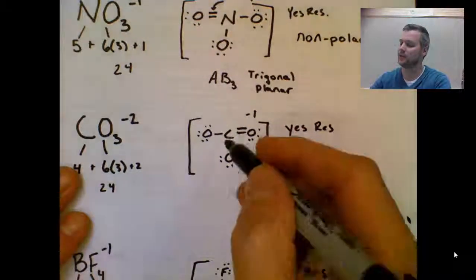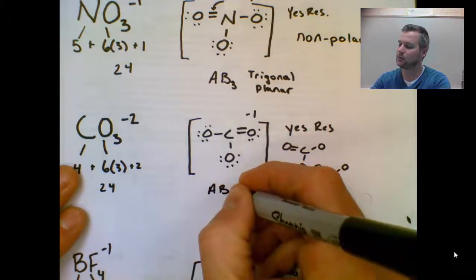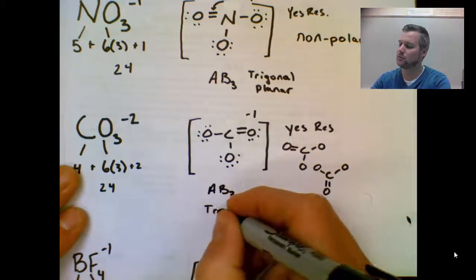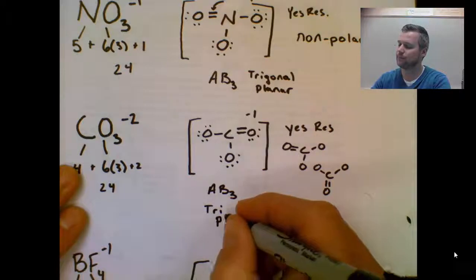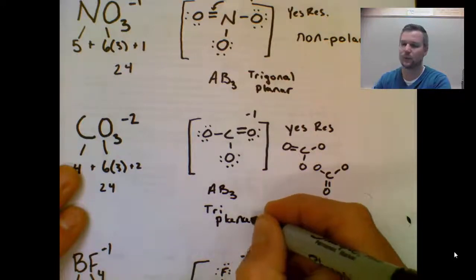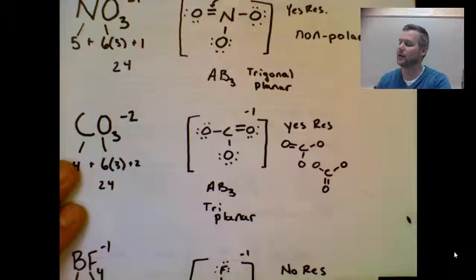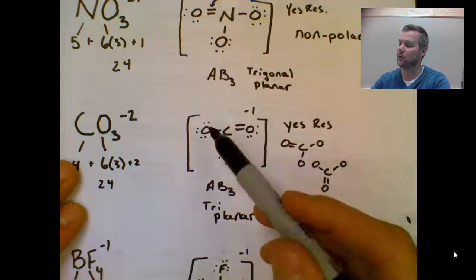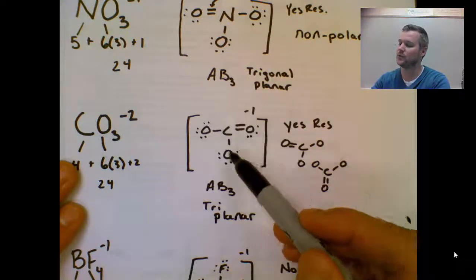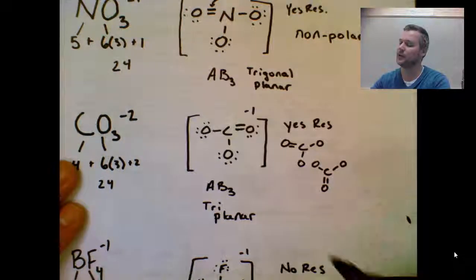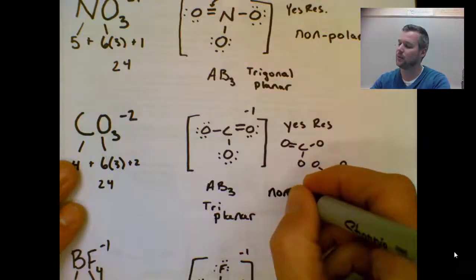CO3, very similar molecule. AB3, which makes it triplanar. And since it's triplanar, and it's the exact same thing as up here, where it's 100% surrounded, carbon's 100% surrounded by only oxygen, no lone pairs. This is also going to be non-polar.